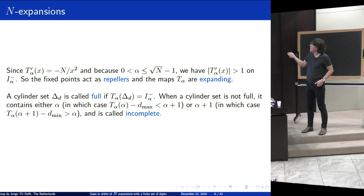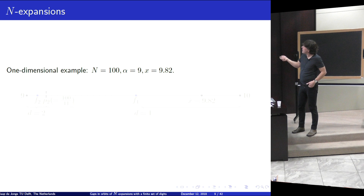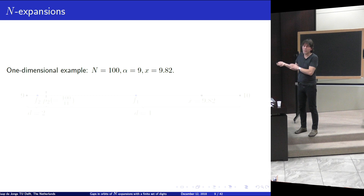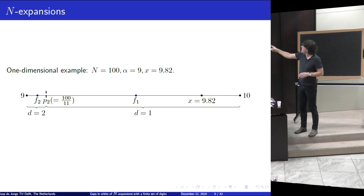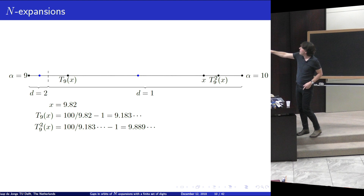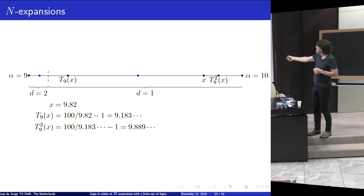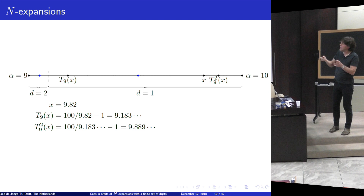A cylinder set is called full if it reaches the whole interval; when a cylinder set is not full, it contains either alpha or alpha plus one and is incomplete. Here's an example with n = 100, alpha at the maximum (sqrt(100) minus one), and x = 9.82. You have two fixed points, a discontinuity point, and two digits — one and two. You can see the repelling effect from the fixed point: the orbit first stays near one digit, then gets forced into the compartment where D equals 2. After some points, for the first time you need to subtract 2.